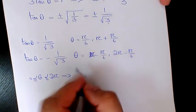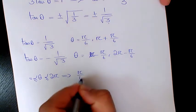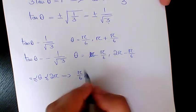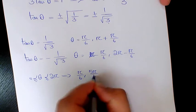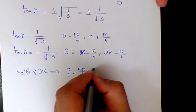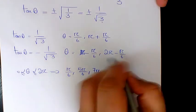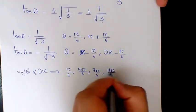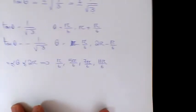It's going to be pi over 6, pi minus pi over 6 which is going to be 5 pi over 6, then you have pi plus pi over 6 that's going to be 7 pi over 6, and 11 pi over 6. Those are going to be the answers from 0 to 2 pi.